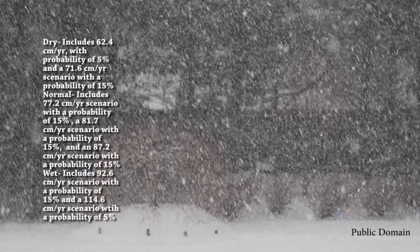The wet category includes the 92.6 cm per year (36.47 inches per year) scenario with a probability of 15%, and the 114.6 cm per year (45.1 inches per year) scenario with a probability of 5%.